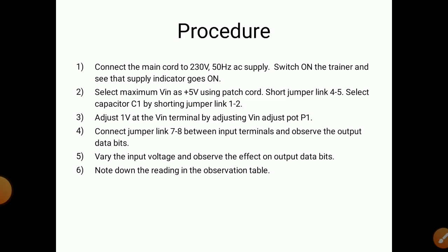Third step: adjust 1 volt at the V input terminal by adjusting the V input adjustment pot. There is one adjustment pot provided by which we can change different voltages. Fourth step: connect jumper link 7 to 8 between input terminals and observe the output data bits. Fifth: vary the input voltage and observe the effect on output data bits, then note down the readings in the observation table.